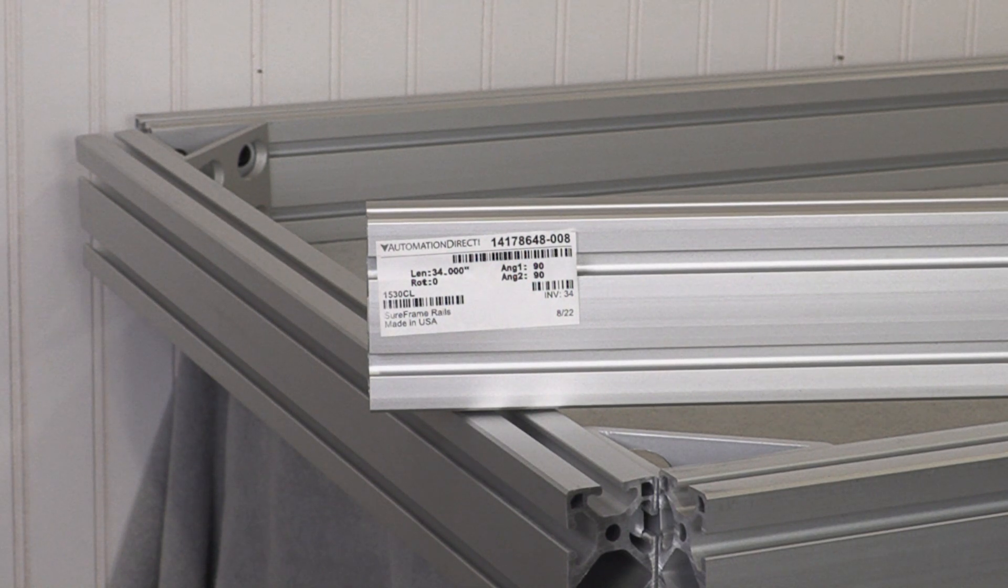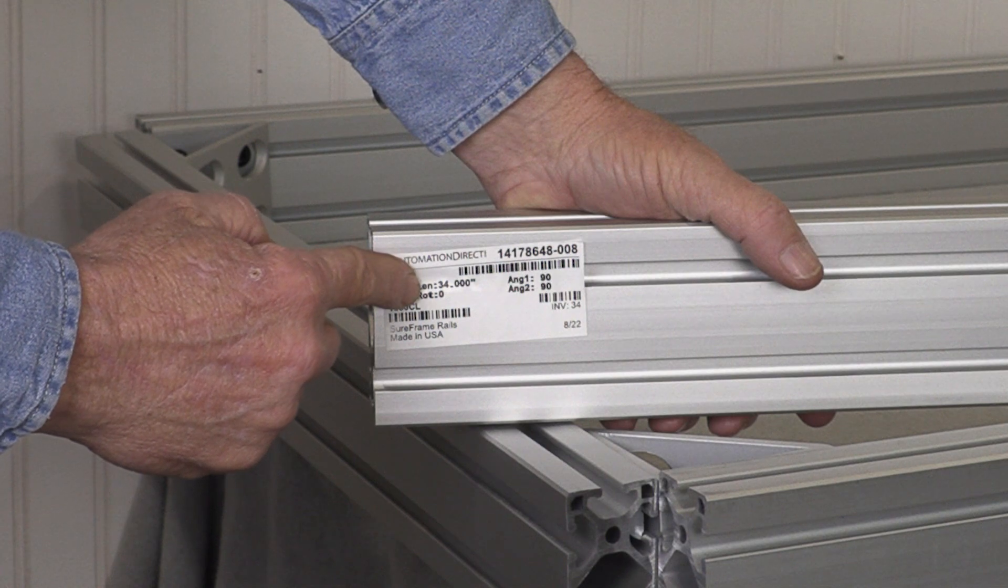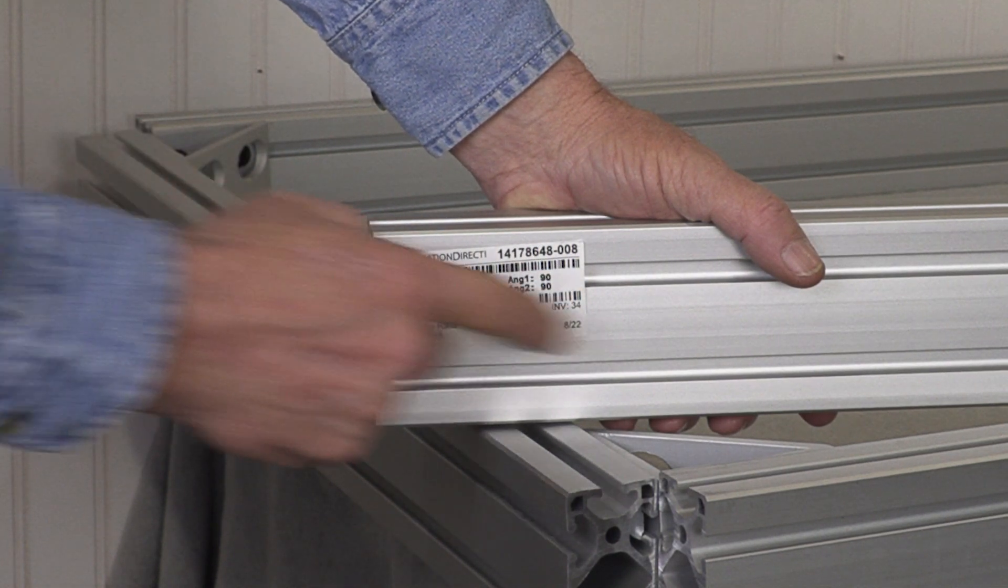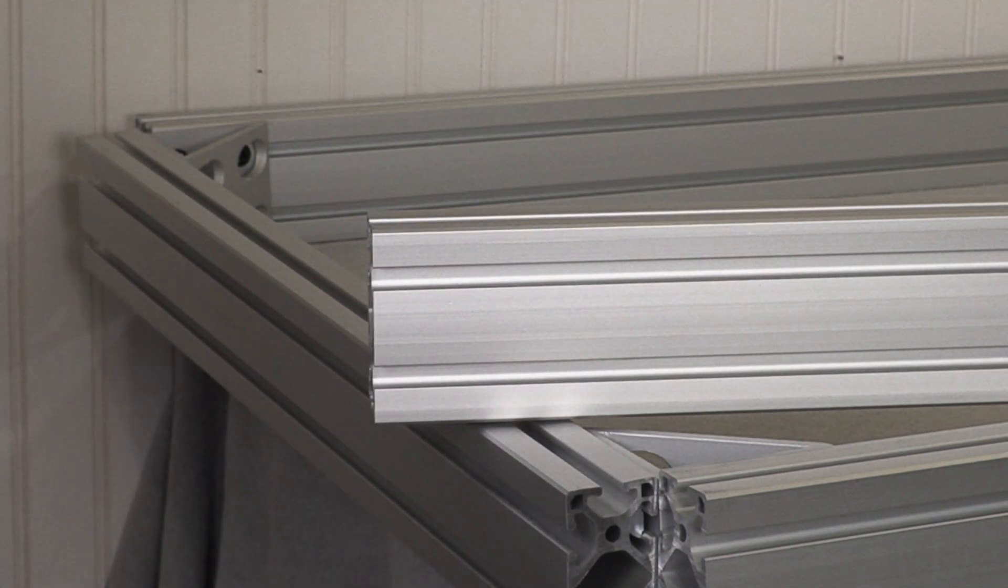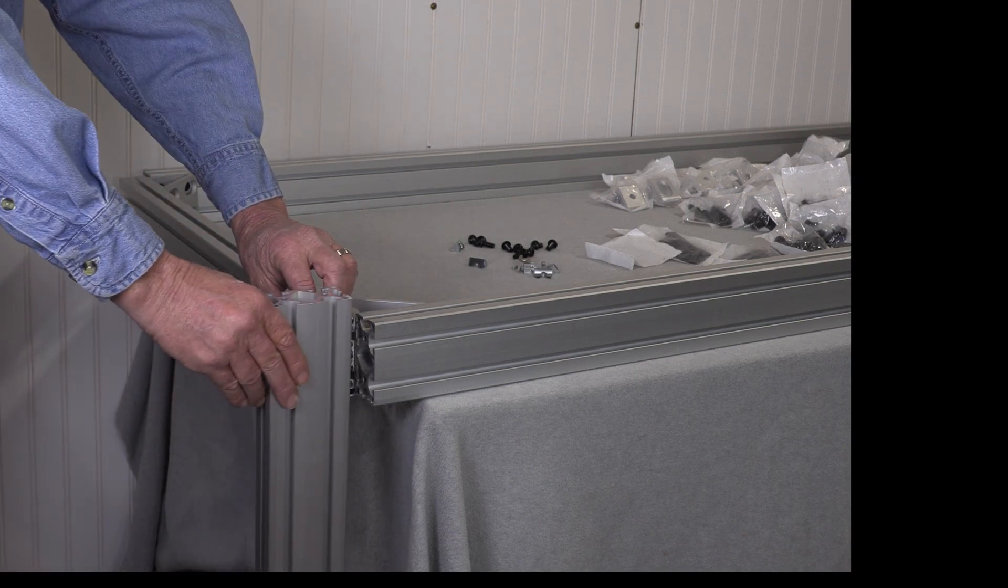Each piece has a label with a part number, length, and angle of cuts. And these stickers never came off while handling, but they peel off super easy without leaving any part of the label or adhesive on the parts. I didn't do it with my order, but you can also add a name to each part for easier identification.